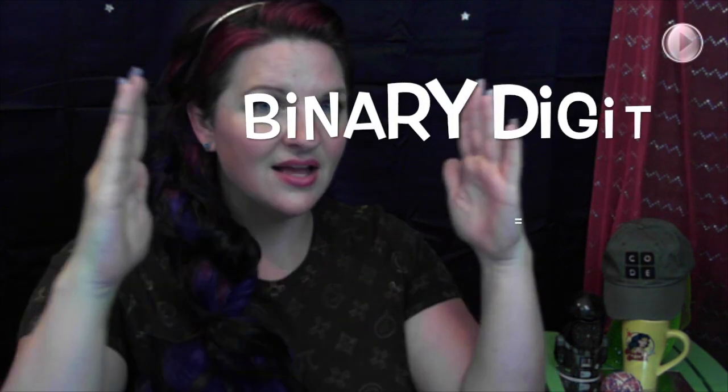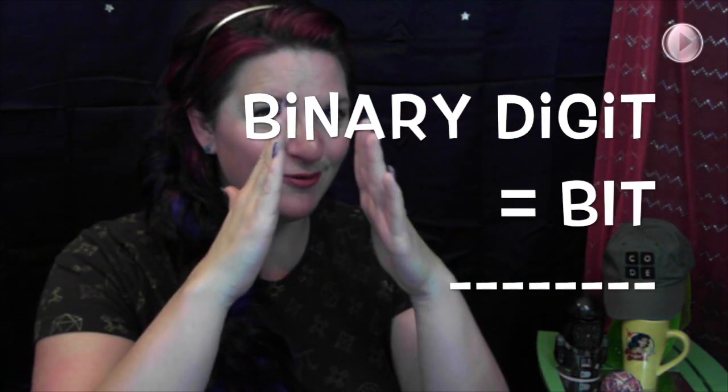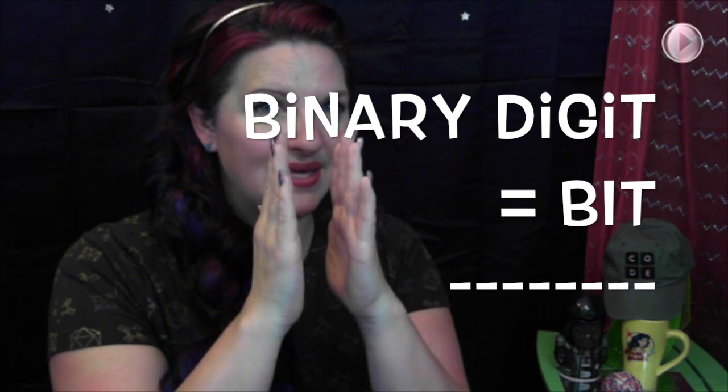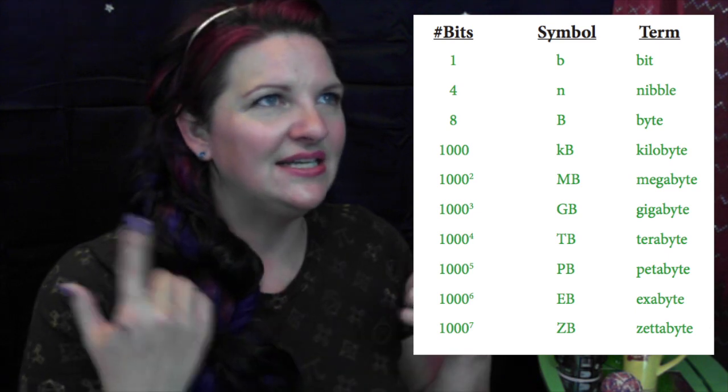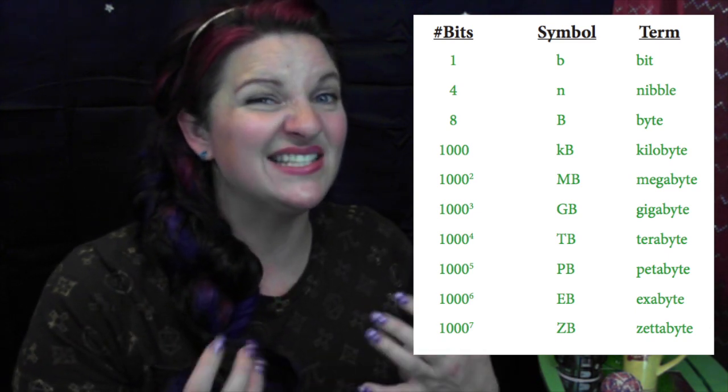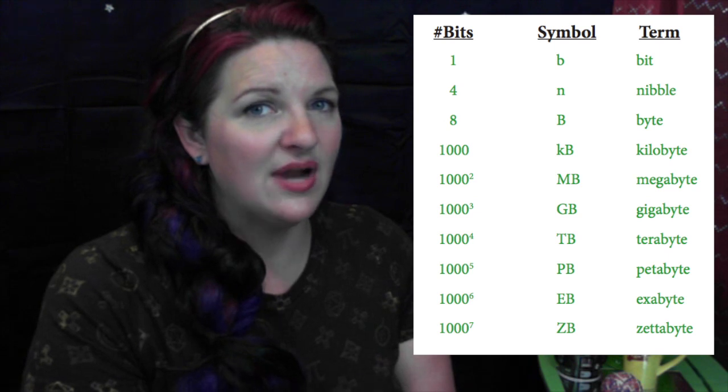One thing to cover in this lesson is the concept of a bit and a byte. Since you have two options for each space, it makes sense to call each one a binary digit — and the shortened term for binary digit is 'bit.' You can then ask students if they know what a grouping of eight bits is called, and that's a byte. Suddenly it'll all start to click when you talk about how many megabytes or gigabytes a computer has.